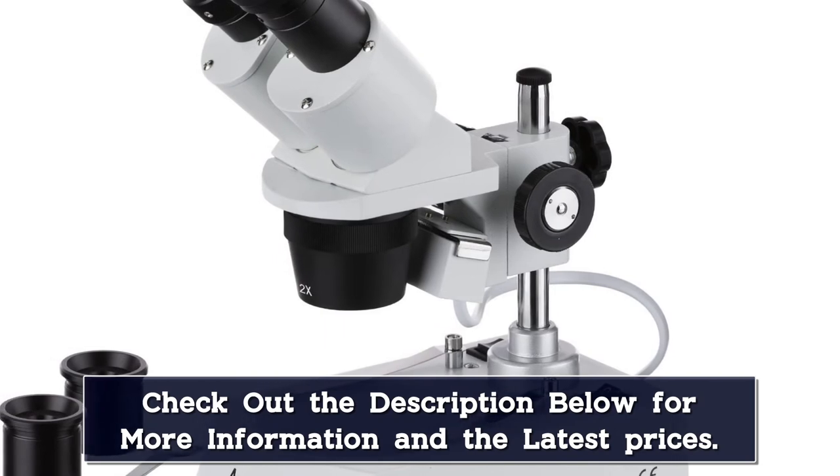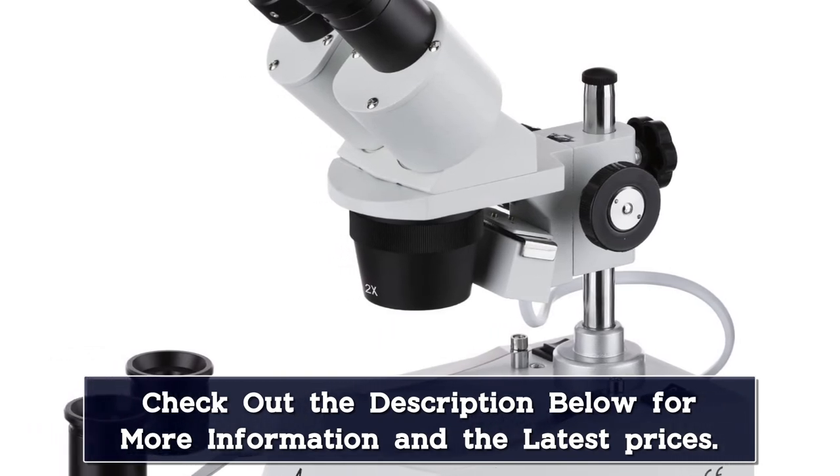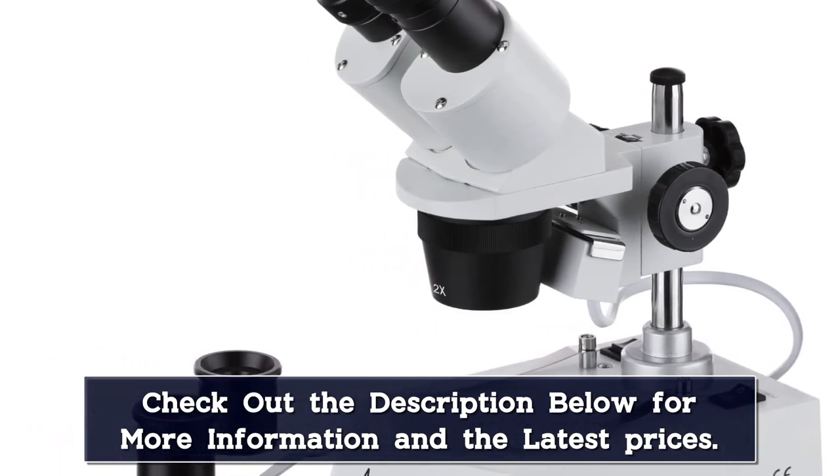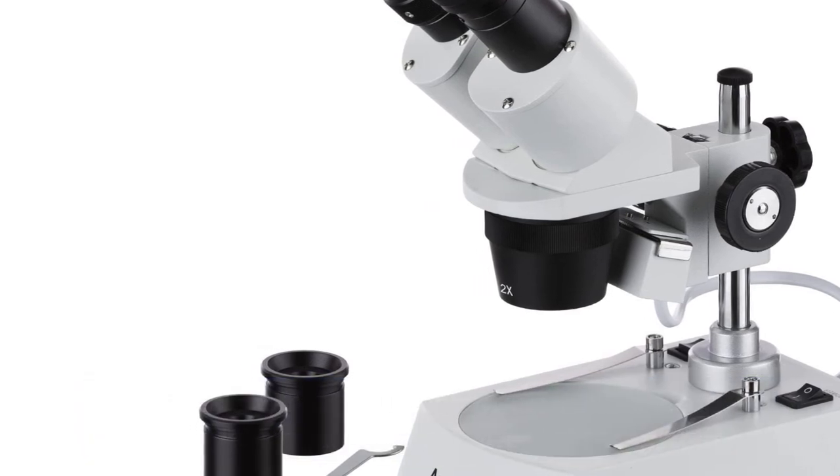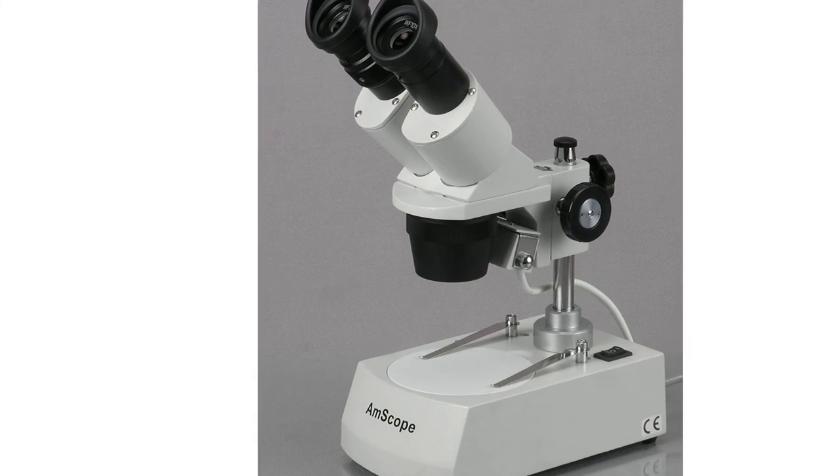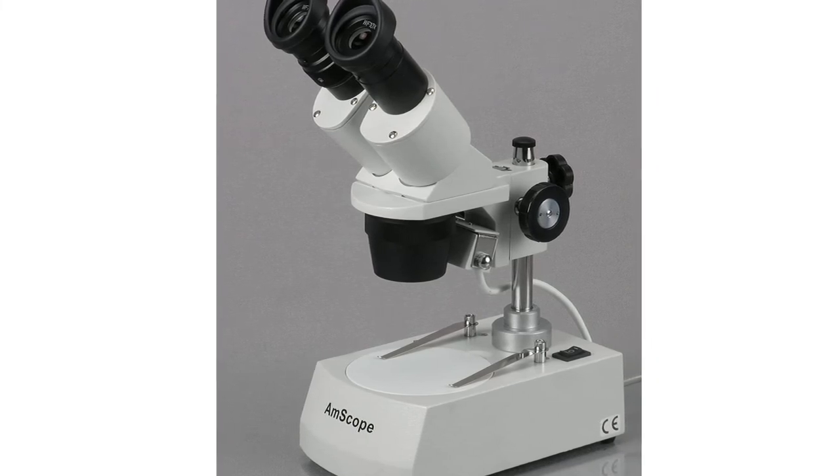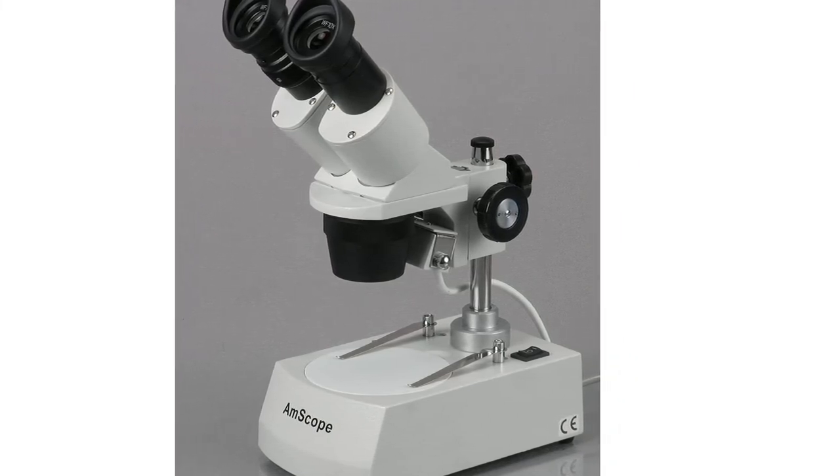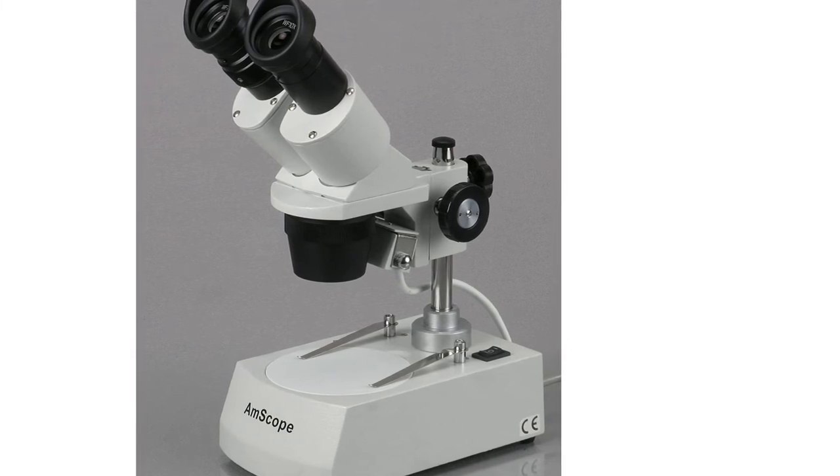Some subjects are best lit from above, while others are best lit from below. Since this microscope has such intense magnification, you can look through semi-permeable objects like skin and liquid. Although you won't see bacteria or other minuscule particles, the top and bottom lighting give you more flexibility with your targets.